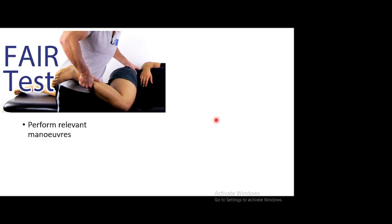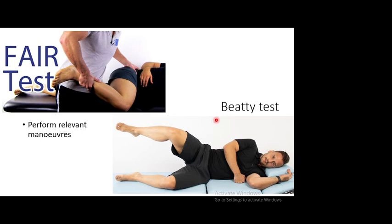Two bedside tests can confirm deep gluteal pain syndrome. The FAIR test — Flexion, Adduction, and Internal Rotation: get the patient to lie on the normal side, flex the hip to 90 degrees, adduct the affected hip, and internally rotate at the hip while holding the ankle. Pain in the buttock is a positive test. The second test: patient lies with the affected side up, flexes at hip and knee, then lifts the affected leg out to the side — pain in the gluteal region is a positive test.